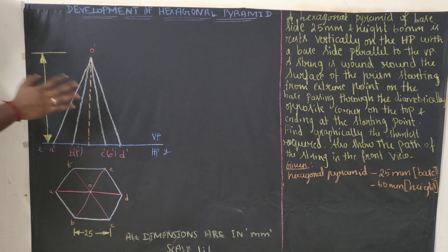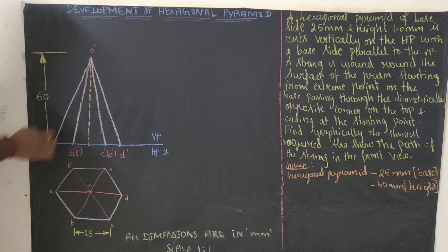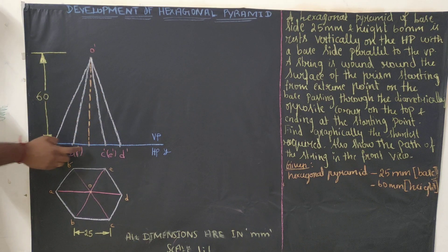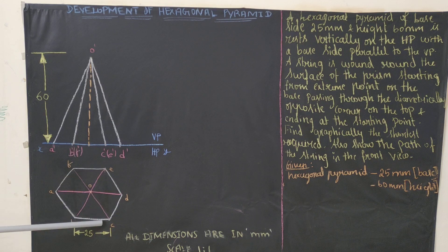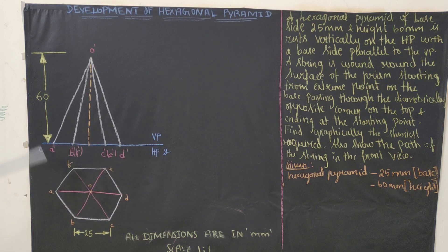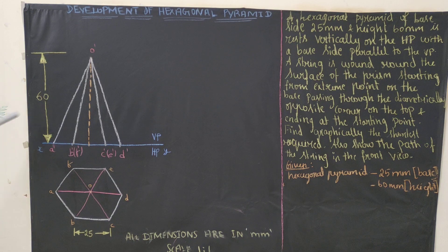Draw the axis line for a height of 60 mm and mark a point, naming it O dash. From here join all the points obtained on the reference line. Name them: A dash, B dash (bracket F dash), C dash (bracket E dash), D dash. Dimensioning extension lines use 2H, dimension lines use H, and arrows use HB pencil. This completes the front view of the hexagonal pyramid.